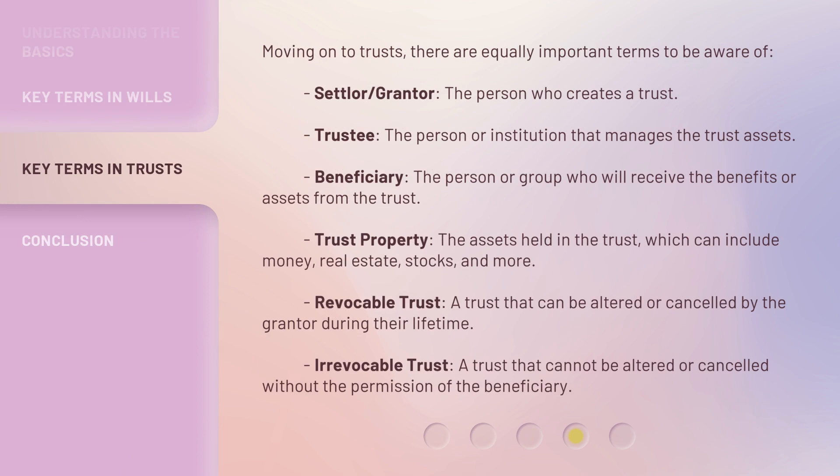Moving on to trusts, there are equally important terms to be aware of. Settlor or grantor: the person who creates a trust. Trustee: the person or institution that manages the trust assets. Beneficiary: the person or group who will receive the benefits or assets from the trust. Trust property: the assets held in the trust, which can include money, real estate, stocks, and more. Revocable trust: a trust that can be altered or cancelled by the grantor during their lifetime. Irrevocable trust: a trust that cannot be altered or cancelled without the permission of the beneficiary.